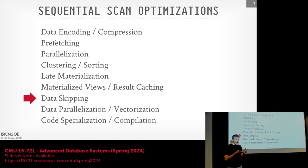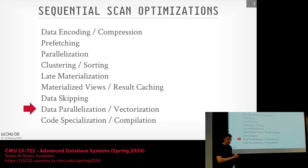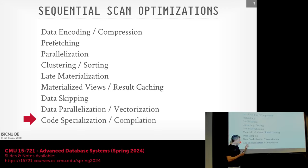Data skipping is being able to identify before actually looking at the data that you don't need it, and not having to process it. Data parallelization or vectorization is a specialization of regular parallelization — the idea is that within a chunk of data containing maybe multiple tuples, can you use things like SIMD to process multiple units at the same time? Code specialization or compilation: since you know the type of data you're processing and what the query is going to be, rather than having the execution engine interpret what the query wants to do, you could just literally generate C code that does exactly what the query wants, compile that, and run it. It doesn't have to be C — you could use intermediate languages. This will be a big thing we cover later.